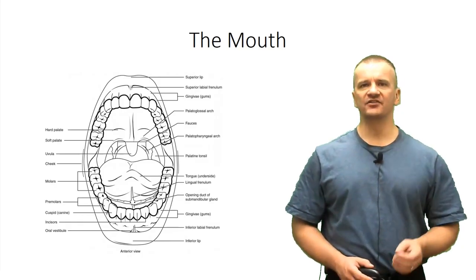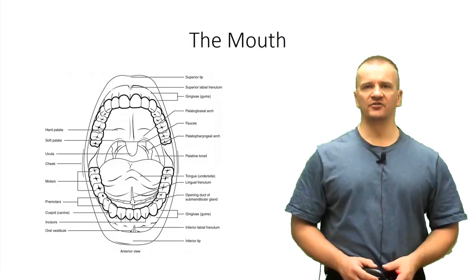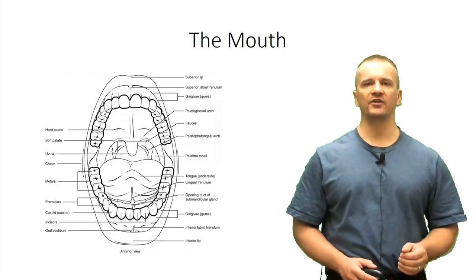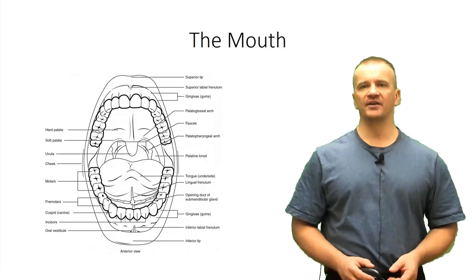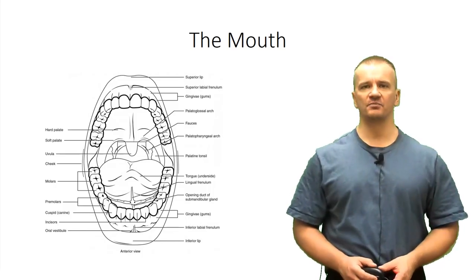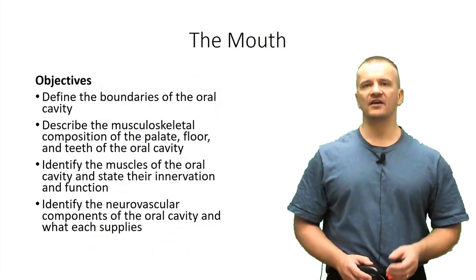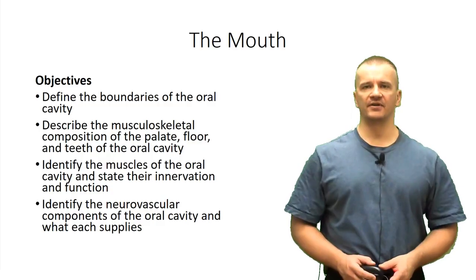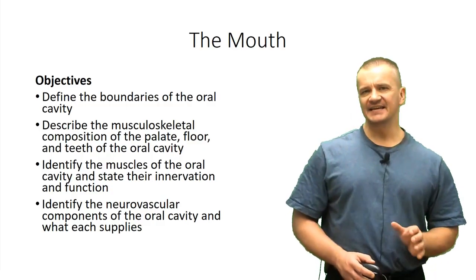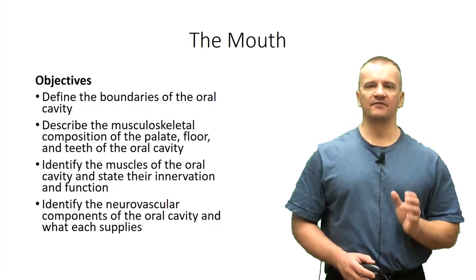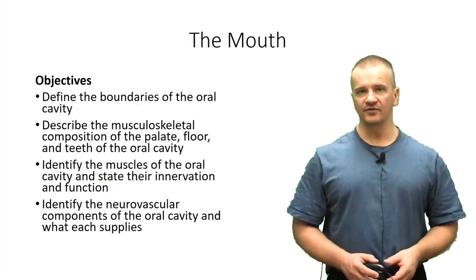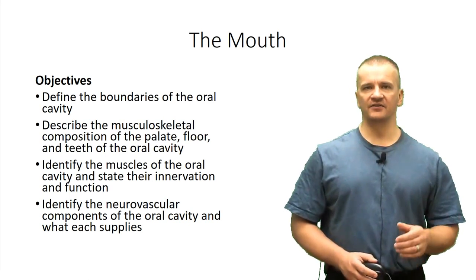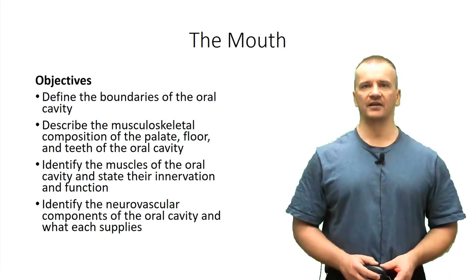With eating and speaking, the complex movements made by the tongue are critically important in working the food around and in generating the various phonations used in making words. In today's session, we'll start by looking at the boundaries that make up the oral cavity, then take an in-depth look at the anatomy of the palate, followed by the floor of the oral cavity and the tongue and associated salivary glands.